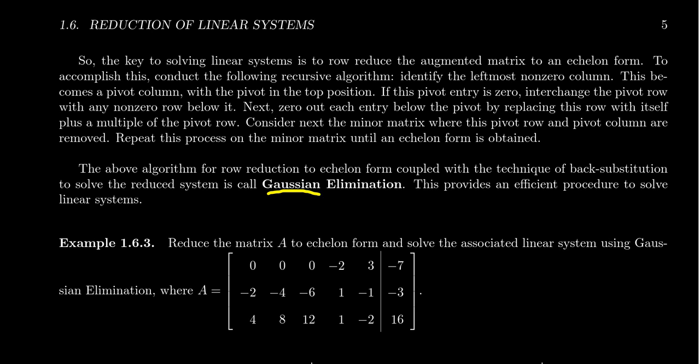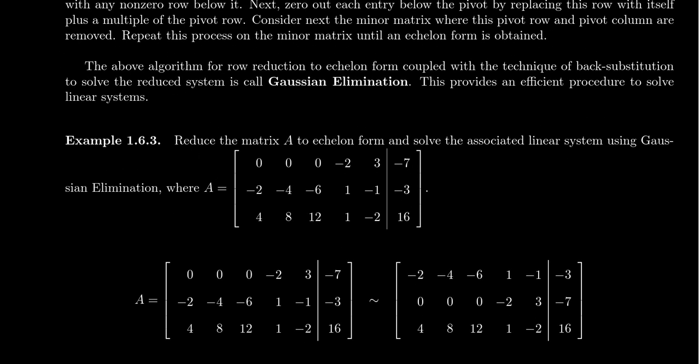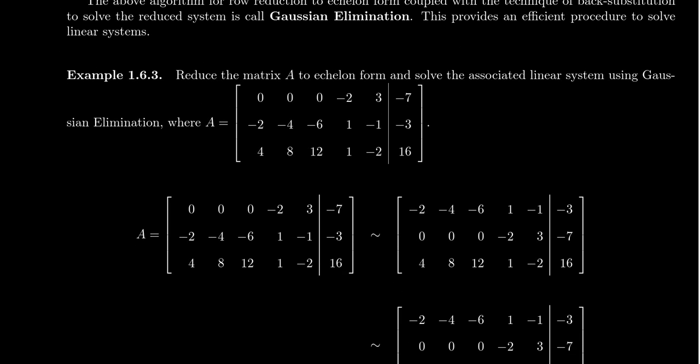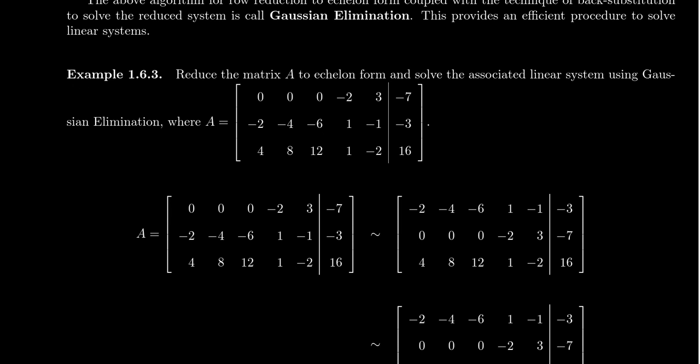This process is referred to as Gaussian elimination. Using this 3 by 6 matrix — it's got a 3 by 5 coefficient matrix — which could correspond to a system of linear equations. Step one: you're going to look for the leftmost column that contains non-zero entries in it.